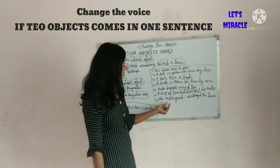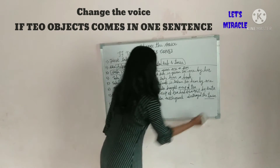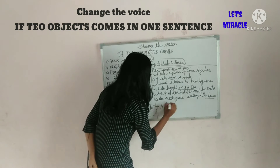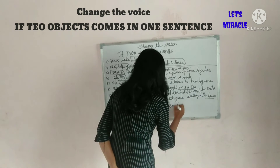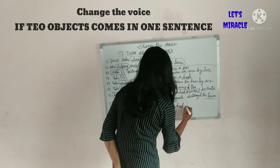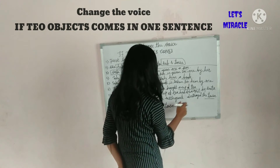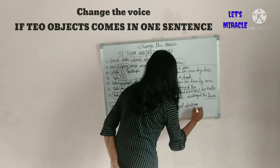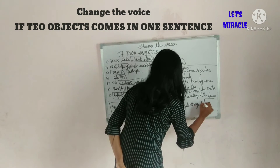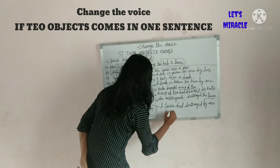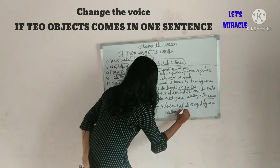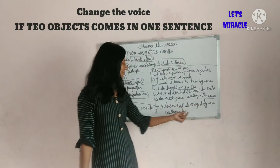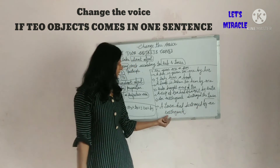Next: 'An earthquake destroyed the town.' The town is the object in the sentence. The helping verb will be 'was' because it is simple past tense, and 'destroyed' remains as is. So the sentence changes: 'An earthquake destroyed the town' becomes 'The town was destroyed by an earthquake'.